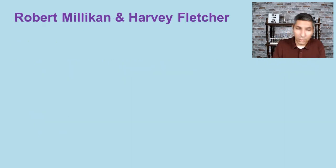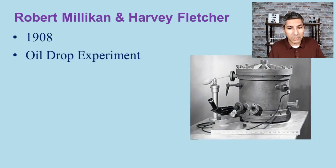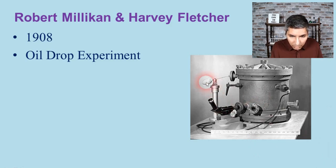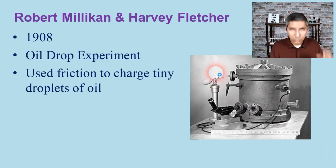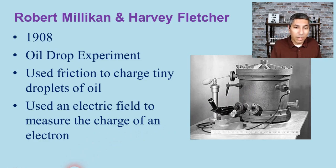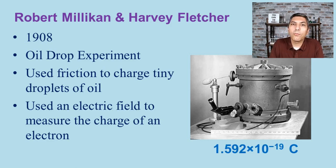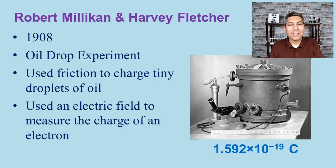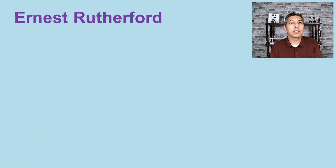Moving forward a few more years, Robert Millikan and Harvey Fletcher performed the oil drop experiment around 1908. Using a drum apparatus, they charged tiny oil droplets with electricity and friction, then used an electric field to measure the charge of a single electron. They found that the charge of a single electron was 1.592 × 10⁻¹⁹ coulombs — a remarkable result for over a hundred years ago.